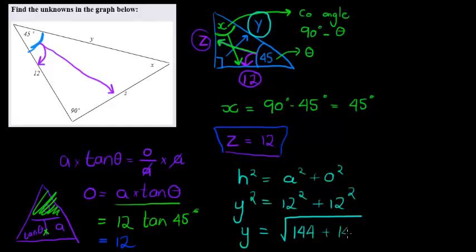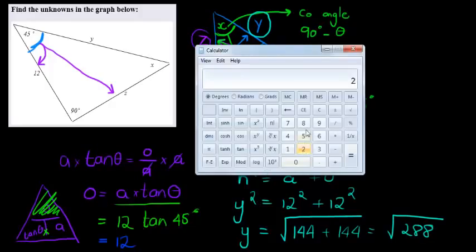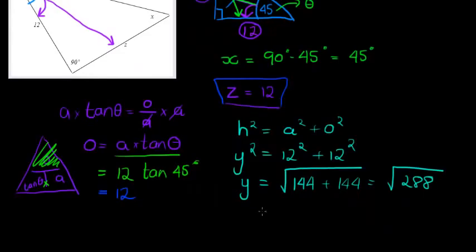Now, how about the last one, y? So again, I can do y with Pythagoras. Since the hypotenuse squared is equal to the adjacent squared plus the opposite squared, the adjacent is equal to 12 squared, plus opposite is equal to 12 squared, and the hypotenuse is equal to y squared. That's what I'm trying to find. So if I just want y, I just take the square root on both sides.